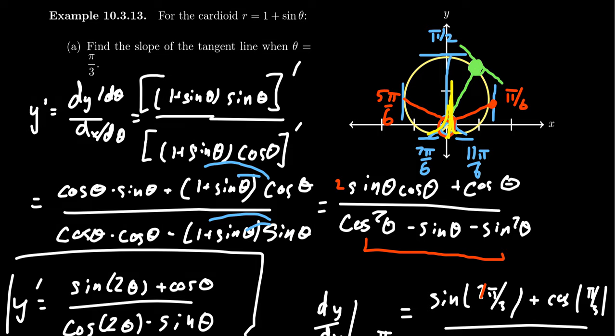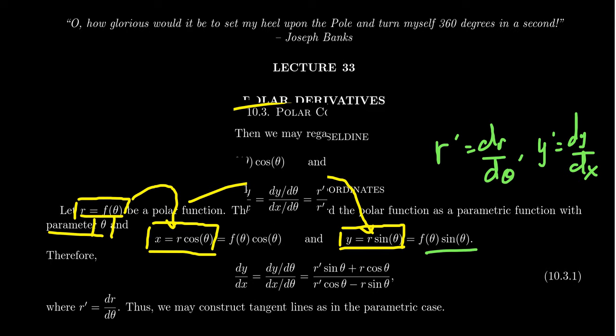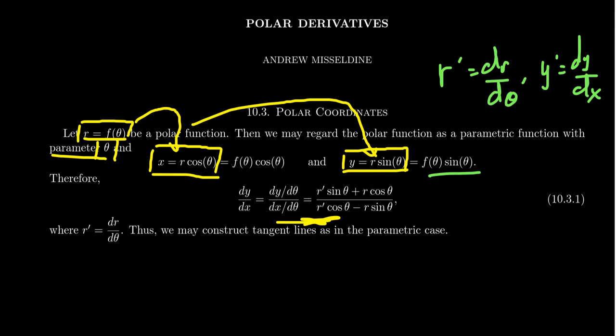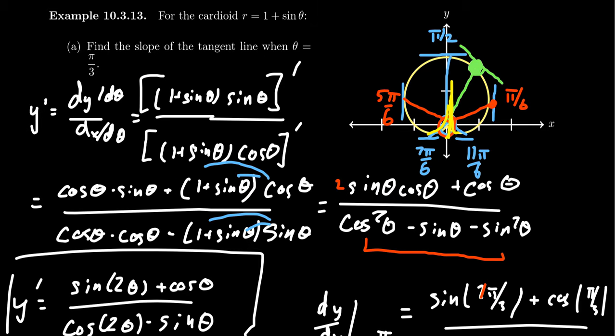We can analyze polar functions using the same tangent line considerations as before. Just make sure that when you take the derivative, you treat the polar function as a parametric function. We can use derivatives and tangent lines to measure monotonicity, and the second derivative to measure concavity for polar functions, just like other functions. That brings us to the end of lecture 33 on polar derivatives. In lecture 34, we'll talk about how integrals are affected when looking at polar functions.